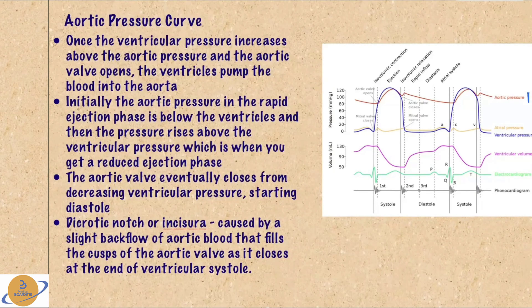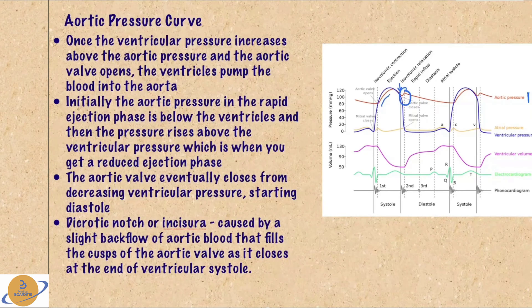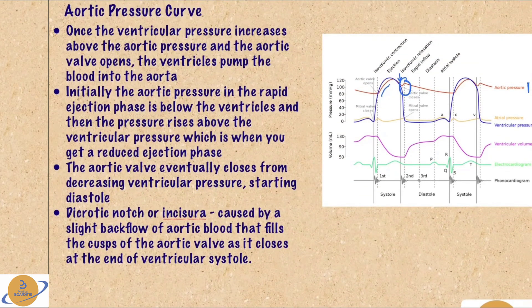Lastly, the aortic pressure curve: the aortic pressure is below the ventricular pressure curve during the rapid ejection phase where the ventricles are pushing blood out to the aorta. Then the aortic pressure goes above the ventricular pressure and the aortic valve closes. You can see a little bump called the dicrotic notch — caused by a slight backflow of aortic blood that fills the cusps of the aortic valve as it closes at the end of ventricular systole. Also note that the aortic pressure curve doesn't go below 80, because the structure of our arteries allows us to maintain blood pressure.